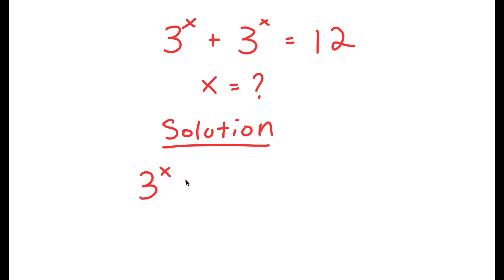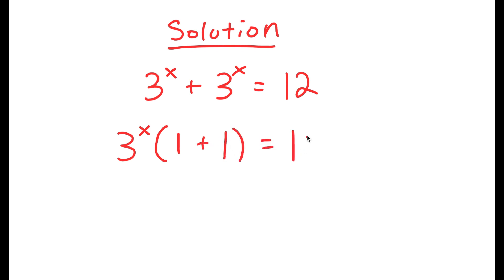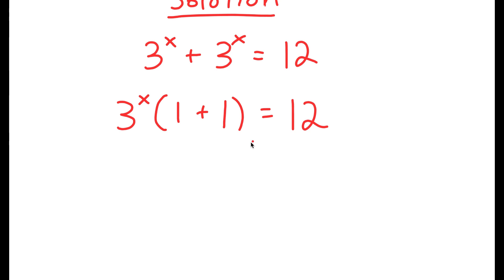I have 3 to the power of x plus 3 to the power of x is equal to 12. What I'm first going to do is factor out 3 to the power of x. So I get 3 to the power of x times 1 plus 1 is equal to 12. Now, 1 plus 1 is 2, so I get 3 to the power of x times 2 is equal to 12.